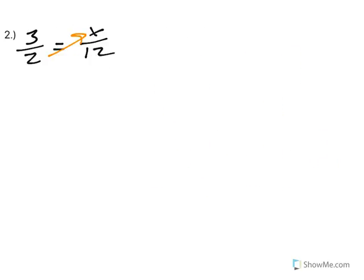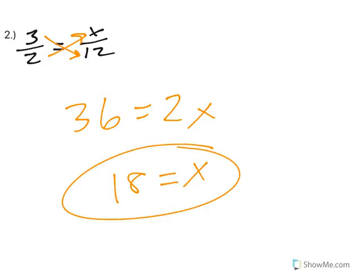In the second one I cross multiply and I get 36 equals 2x, divide by 2, x is 18.